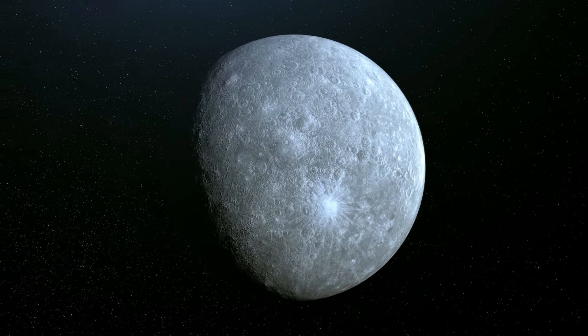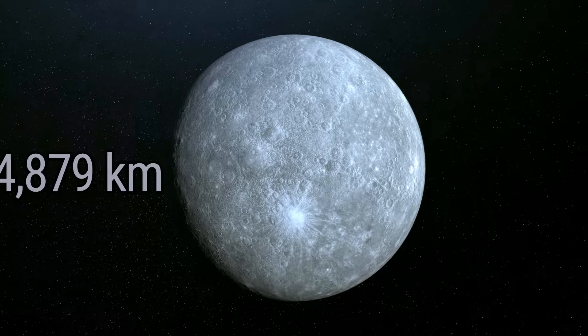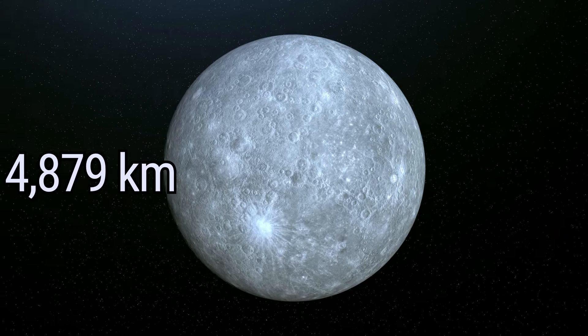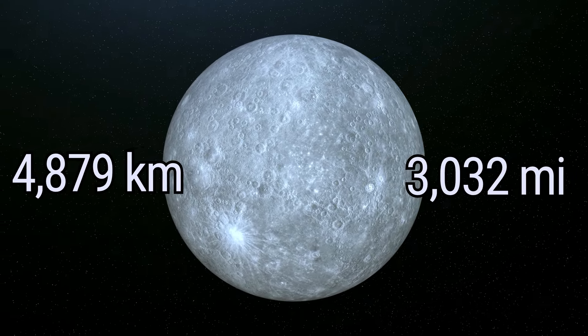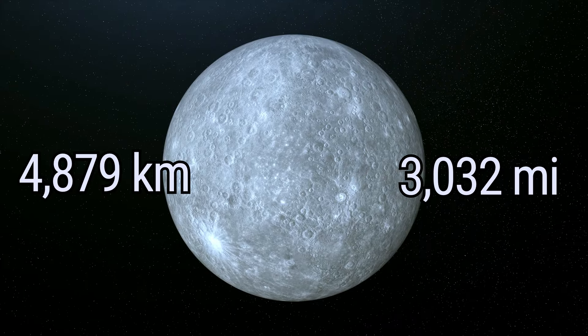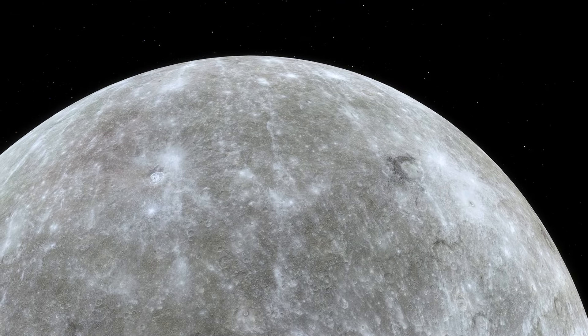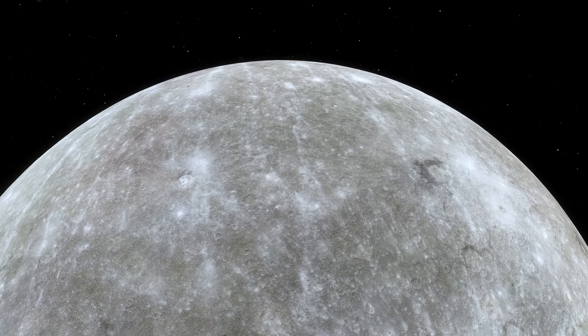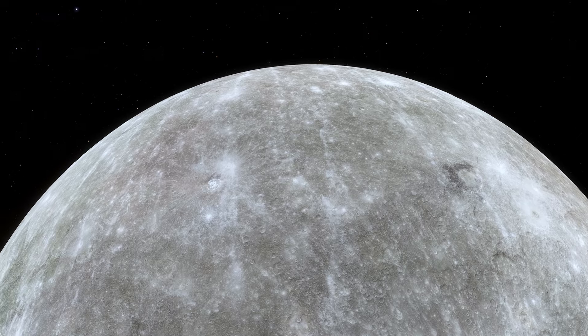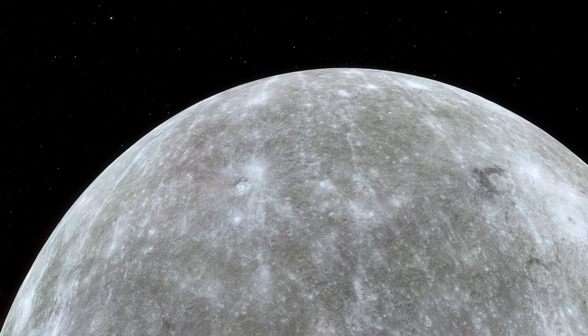This small, rocky planet has a diameter of 4,879 kilometers, or 3,032 miles, making it the smallest planet in our solar system. Mercury has very little atmosphere, just a thin exosphere, mostly composed of oxygen, hydrogen, sodium, helium, and potassium.